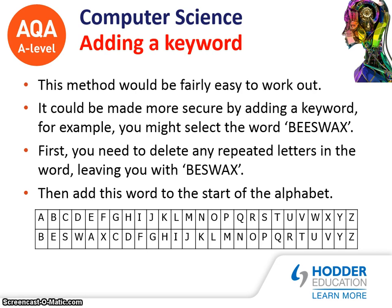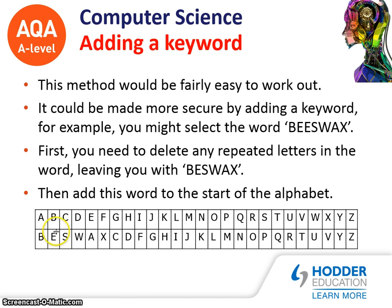One other method is to use the Caesar cipher and add a keyword at the beginning. For example, let's take 'beeswax'. First, we delete any repeating letters in the word, giving us 'b-e-s-w-a-x', and that will be the start of the alphabet. Then we put the other letters in place. When we get to a letter already used — for instance, the S — we'll skip that one. So all the other letters have been shifted. As you can see at the end, some of the letters are the same, but that is the way the Caesar cipher works.